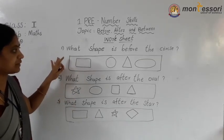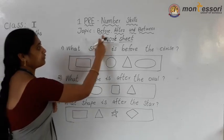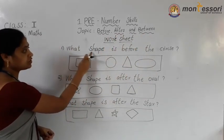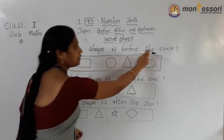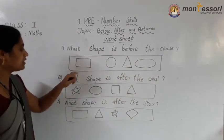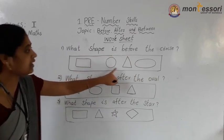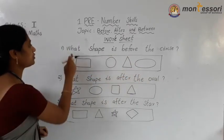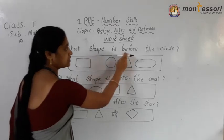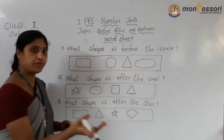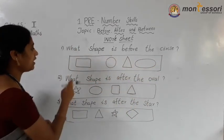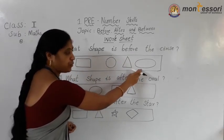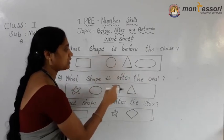This is your mass assessment. Topic: before, after, and between. See here — what shape is before the circle? Here rectangle, circle, triangle and oval. What shape is before the circle? Before means mundu. You think it.